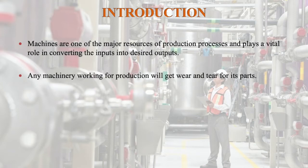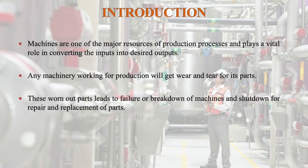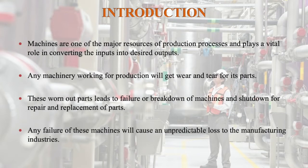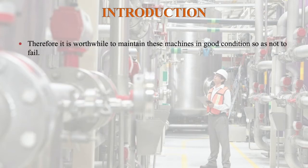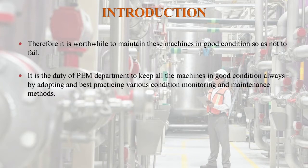Any machinery working for production will get wear and tear on its parts. These worn out parts lead to failure or breakdown of machines and shutdowns for repair and replacement of parts. Any failure of these machines will cause an unpredictable loss to the manufacturing industries. Therefore, it is worthwhile to maintain these machines in good condition so as not to fail. It is the duty of plant engineering and management department to keep all machines in good condition always by adopting and best practicing various condition monitoring and maintenance methods.